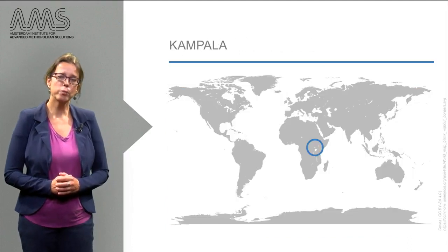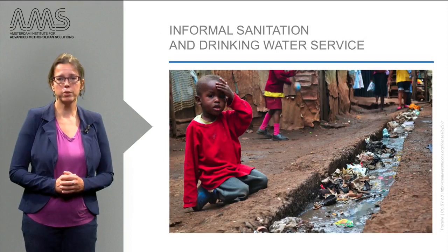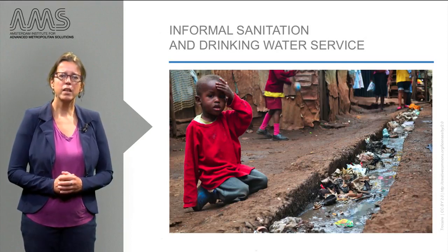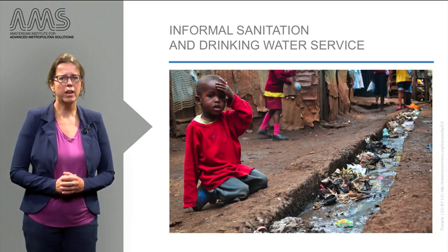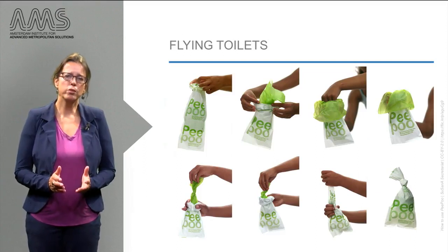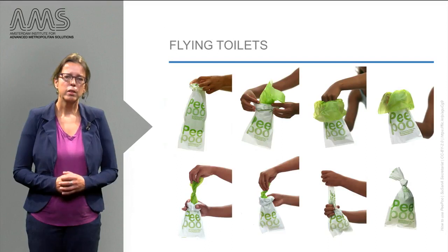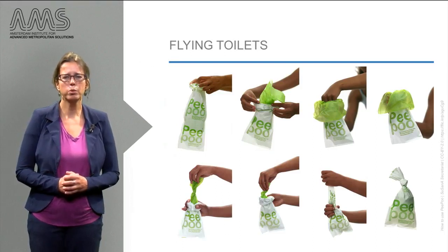We start the week in the informal settlements of Kampala, where formal provision of services is scarce or absent. In these circumstances, it is up to communities to realize some sort of drinking water service and sanitation together with private vendors, informal businesses, NGOs and public service providers. We will discuss how people are forced to create their own solutions under conditions of fragmented infrastructure. But can we call a flying toilet a sanitation solution? We will show you that the purpose of a water chain is not restricted to water provision, but also to its transport and treatment of wastewater.